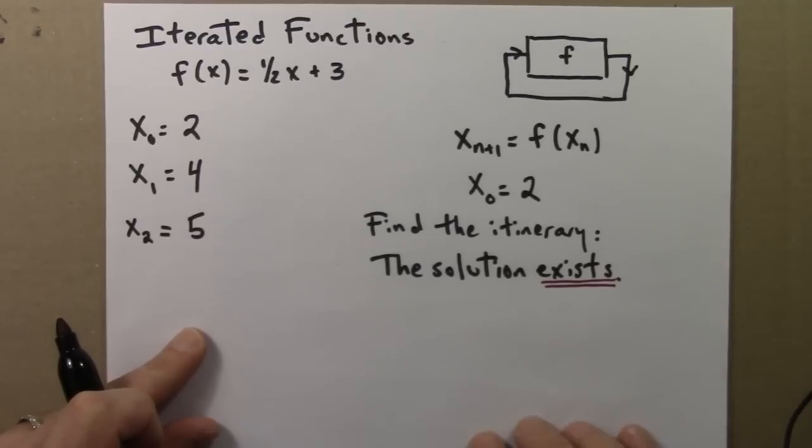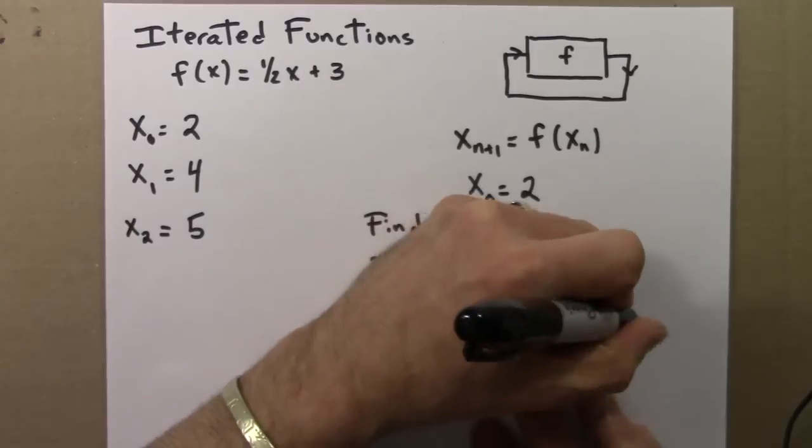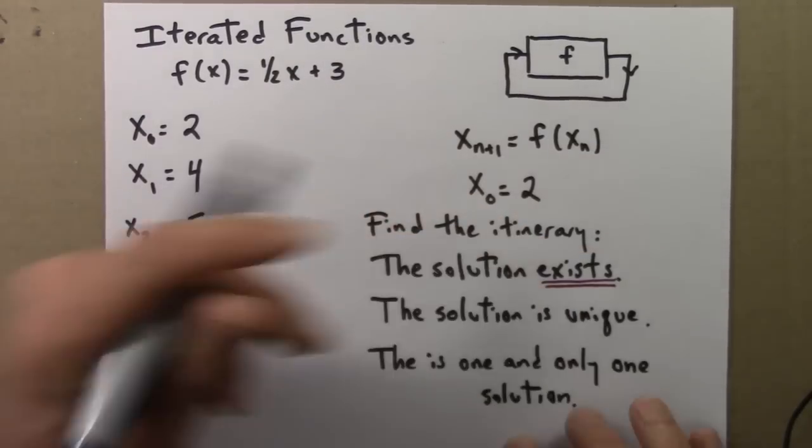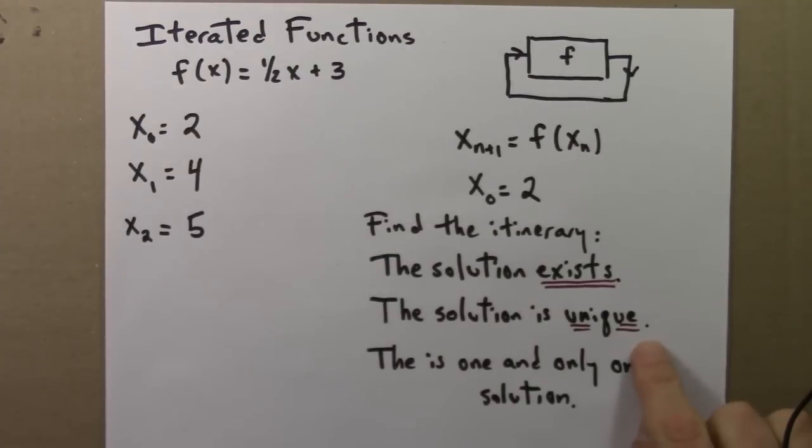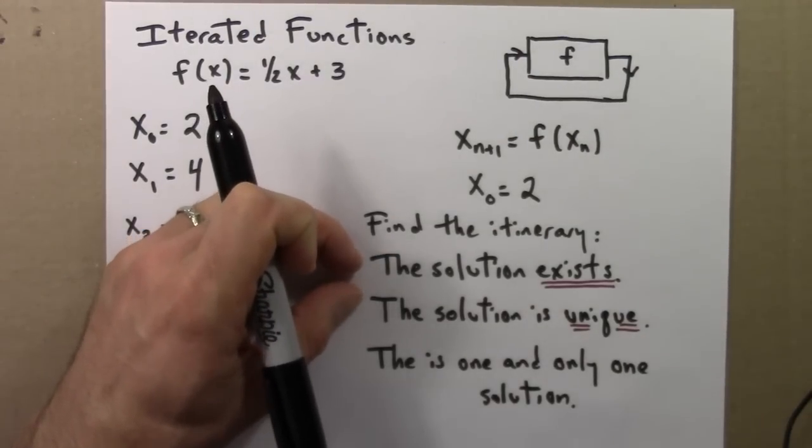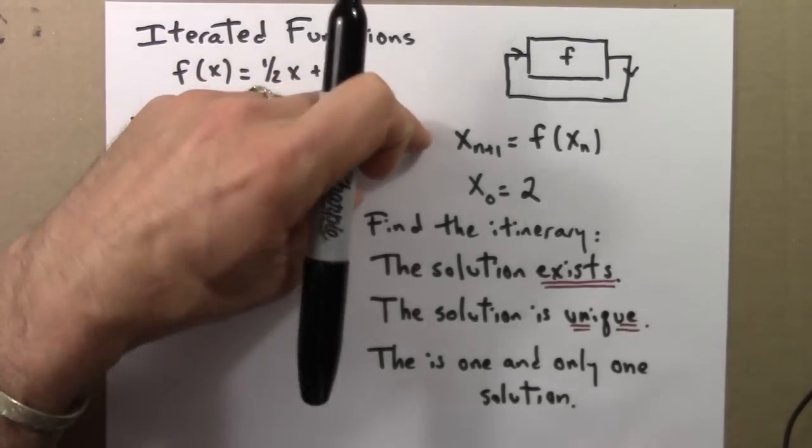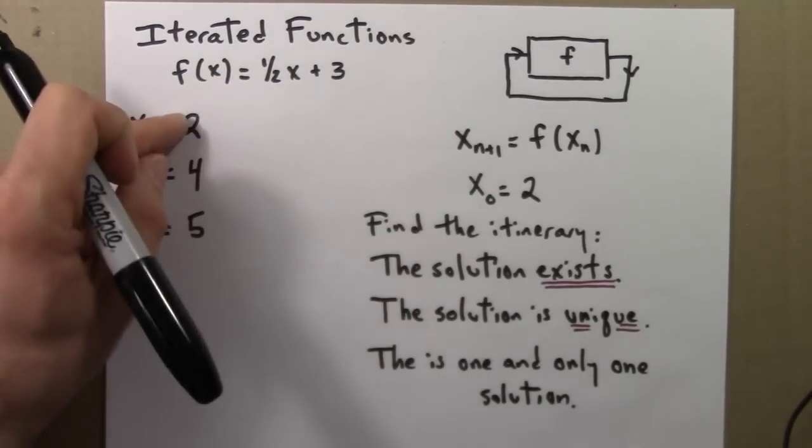So in math we would say that the solution is unique. So we would say that the solution is unique. And these two statements taken together are equivalent to the following: there is one and only one solution to this problem. The problem here being find the orbit of this iterated function.